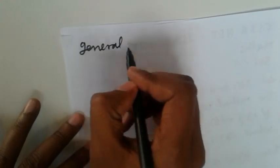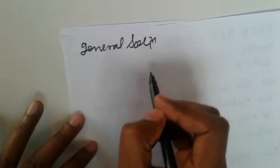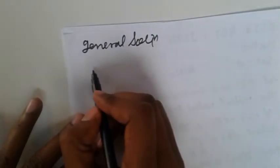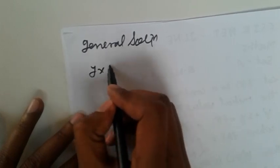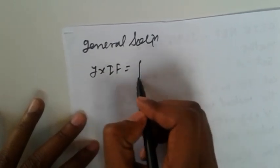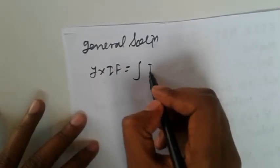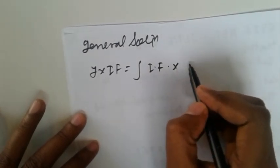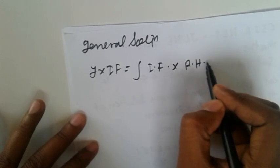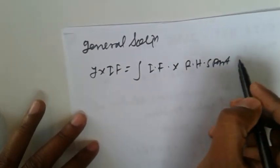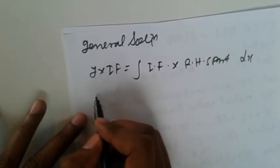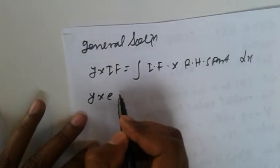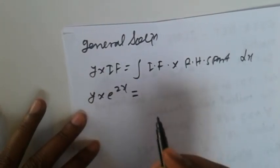Now let's find the general solution. The general solution is Y times the integrating factor equals the integral of the integrating factor times the right-hand side. So Y times e^(2x) equals the integral of e^(2x) times f(x) dx.